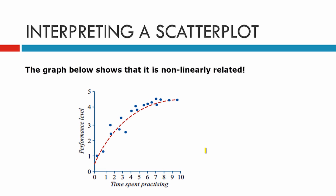This next one is non-linearly related. We can see clearly that the line suggests a curve — you can see it right there — so this is a non-linearly related graph.